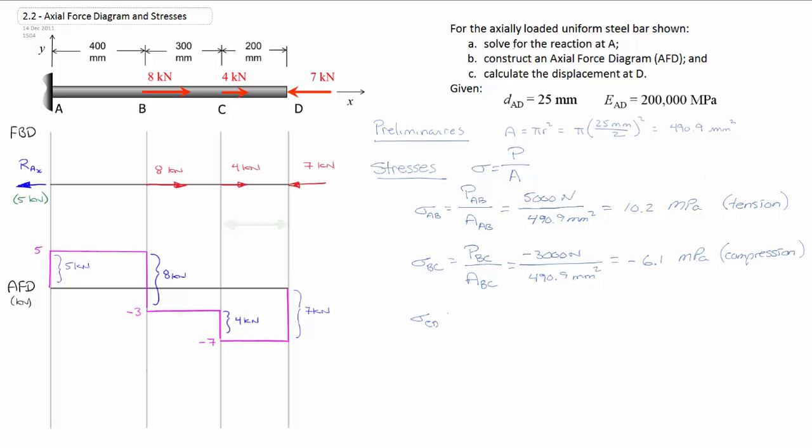Stress CD is equal to load CD divided by area CD. And again, back from our axial force diagram, we see negative 7,000 newtons for our internal load, 490.9 millimeters squared, calculates out to negative 14.3 megapascals. Again, negative, so we see that it is in compression.